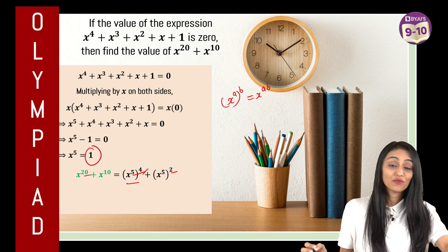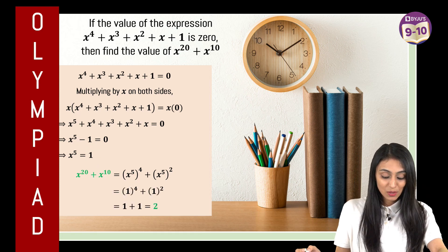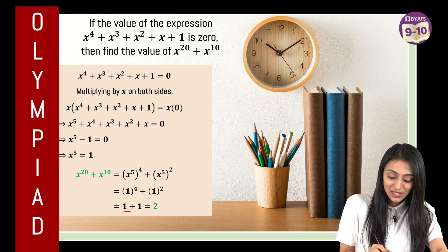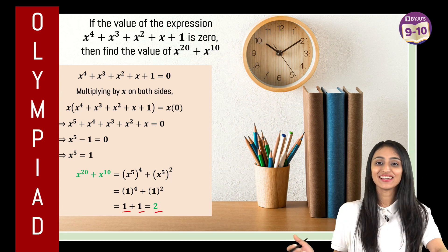I already have the value of x to the power 5 which is 1 to the power 4 plus 1 square, that's going to be 1 plus 1 which is 2 and that's the final answer.